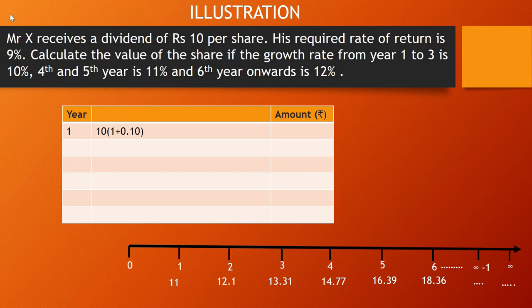The question says that Mr. X receives a dividend of rupees 10 per share right now. So at time zero, D0 equals 10, meaning the company is paying a dividend of rupees 10 at the current time period. His required rate of return is 9 percent, that means r equals 9 percent.